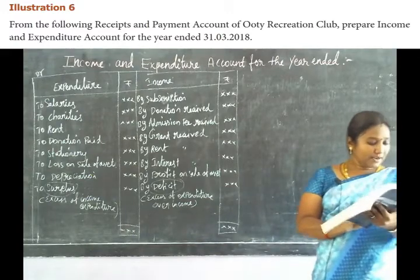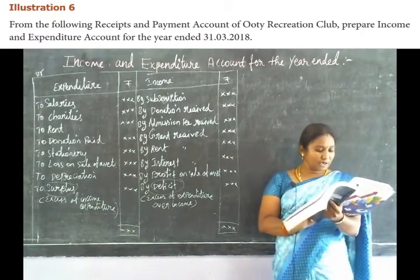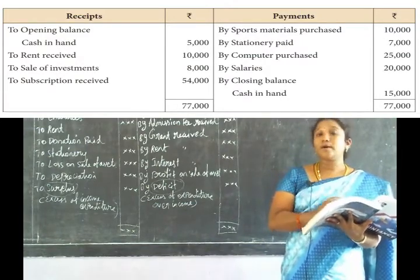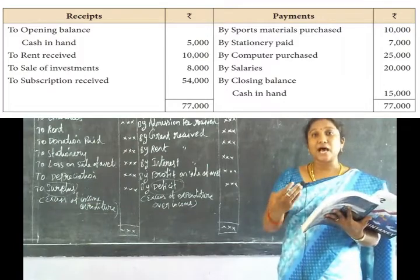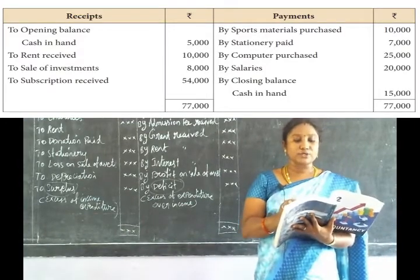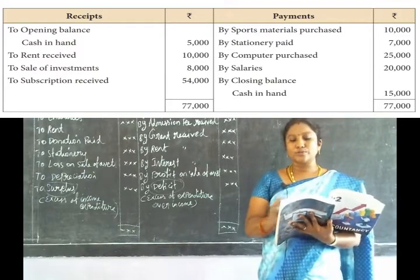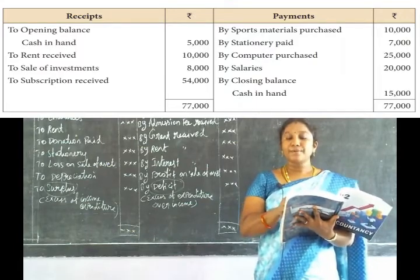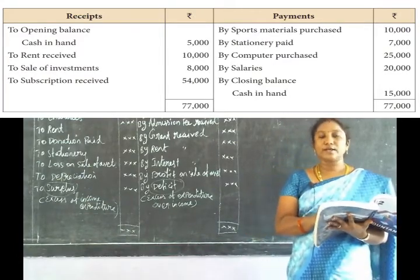Page number 50: from the following receipt and payment account of Ooty Reaction Club, prepare the income and expenditure account for the year ended 31st March 2018. Receipts: opening balance 5,000, rent received 10,000, sale of investment 8,000, subscription received 54,000. Payments: sports material purchased 7,000, computer 25,000, salaries 20,000, closing balance cash 15,000. Overall total: 77,000.